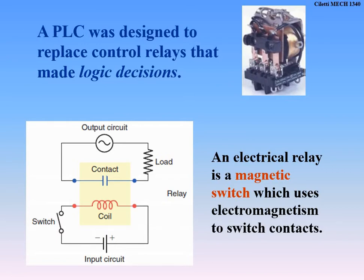As discussed in an earlier lecture, the whole purpose of a PLC is to replace control relays because of wiring and cost. The big advantage is we can make quick changes in a PLC ladder logic program without physically going out to the field to rewire, which could take hours in a messy cabinet. We still use relays to open and close, but we control them with a PLC rather than wiring relay to relay.